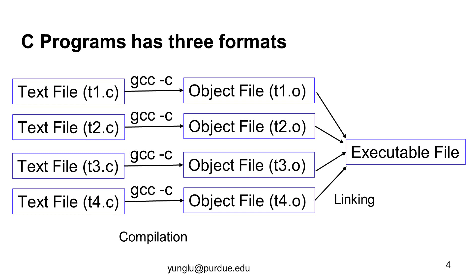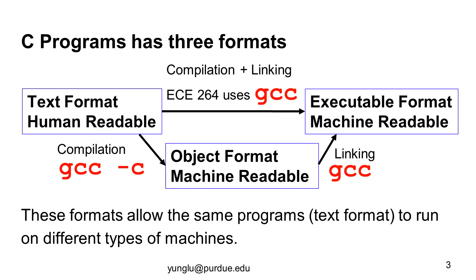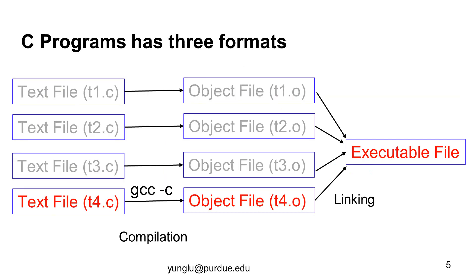To put this another way, an executable file may be created by linking several object files. Each object file is created by compiling a text file. What are the advantages of this two-stage process? First, separating human-readable files from machine-readable files allows the same programs written by humans to run on different types of machines. Second, if only one of the text files is modified, only the corresponding object file needs to be recreated. The newly created object file can be linked with the unchanged object files to create the executable, saving time spent recreating object files unnecessarily.